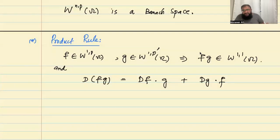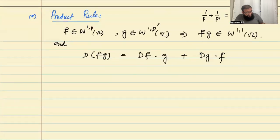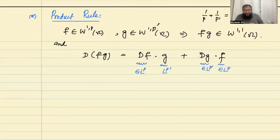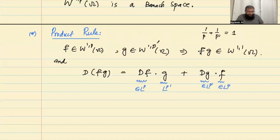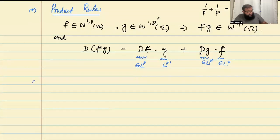P and P-prime are conjugate numbers satisfying 1/P + 1/P' = 1. The derivative of F is from Lp and G is from Lp-prime; the derivative of G is from Lp-prime and F is from Lp. So their product belongs to L1, or in other words, to the Sobolev space W11.